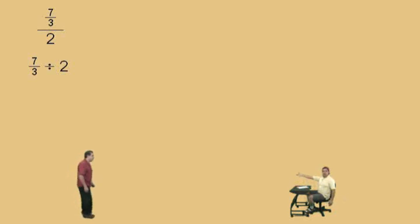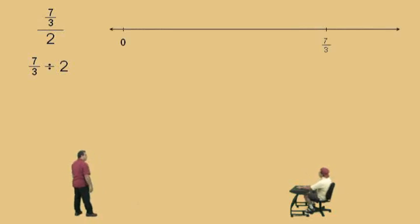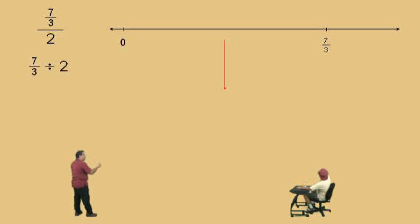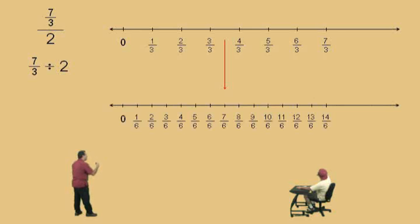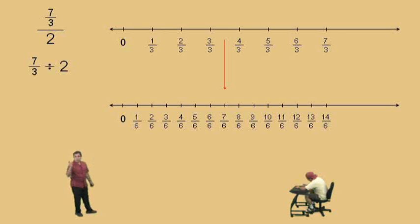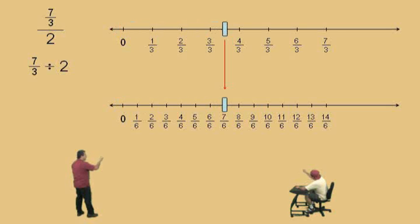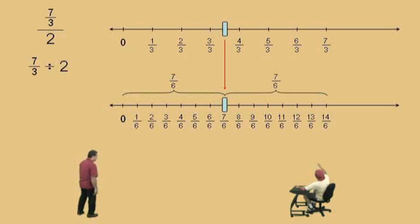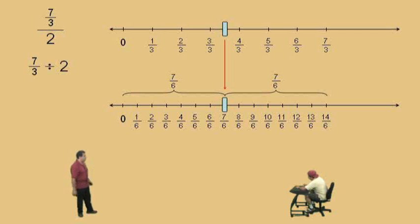I'm going to do my number lines one more time. Let me put my number line up there, 0 to 7/3. Charlie said let's take half of it, so that red arrow is showing us where the middle is. I'm going to bring another line just below, broken up into sixths, so Charlie can see where the middle is. Where is it, Charlie? 7/6. At 7/6. Notice: 14/6 is the same as 7/3, so right in the middle should be that 7/6. So 7/6 and another 7/6 gives us 14/6, so the middle is 7/6, which is our answer. Half of 7/3 should be 7/6.